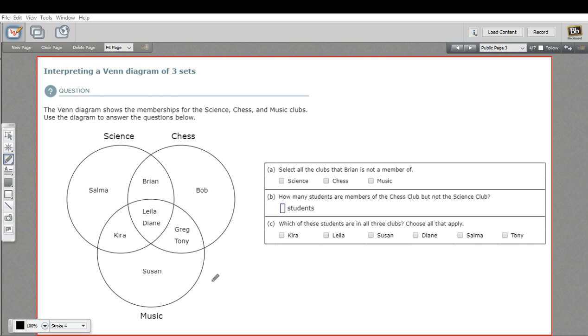So this big circle for chess, all of these people belong in chess club. And then all of these people belong in science club. And you can see there's some overlap.